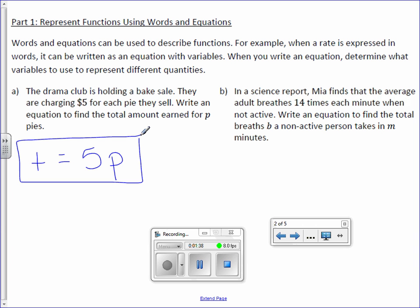Letter B. In a science report, Maya finds that the average adult breathes 14 times each minute when not active. Write an equation to find the total breaths B a non-active person takes in M minutes. We're going to start with our total, and our variable for total are the breaths, or B, equals. If they take 14 breaths, if they breathe 14 times each minute, then what you're doing is you're taking that 14 times and multiplying it by the number of minutes. So the equation is B equals 14M.